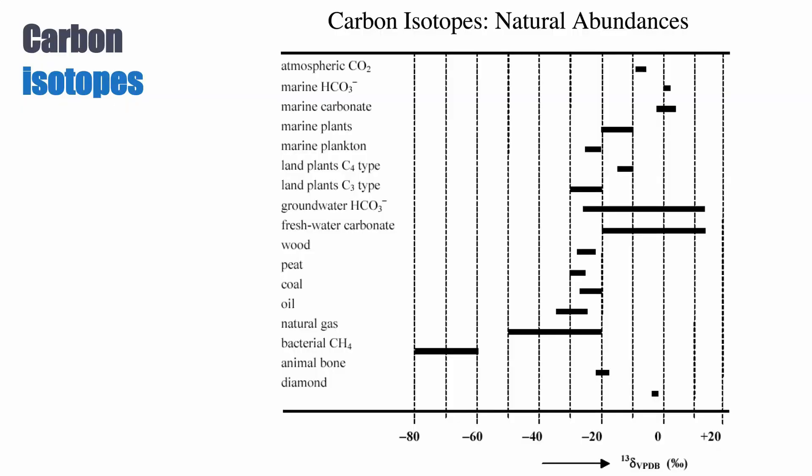It gets really interesting when you look at things like peat, wood, or coal, because they come from organic tissues. They tend to be more negative in terms of their carbon isotope composition. Things like oil and natural gas are also quite negative, plotting around minus 20 to minus 40 per mil.